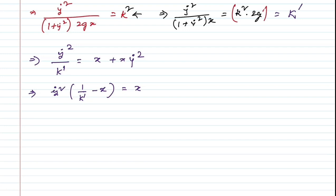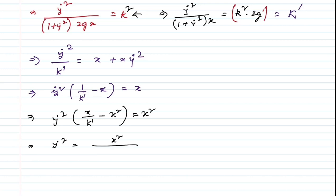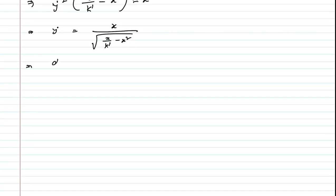Multiplying both sides by x and simplifying, we solve for ẏ = dy/dx = √x / √(x/k′ − x²). To integrate, we write the denominator as √(2ax − x²) by letting 1/k′ = 2a.